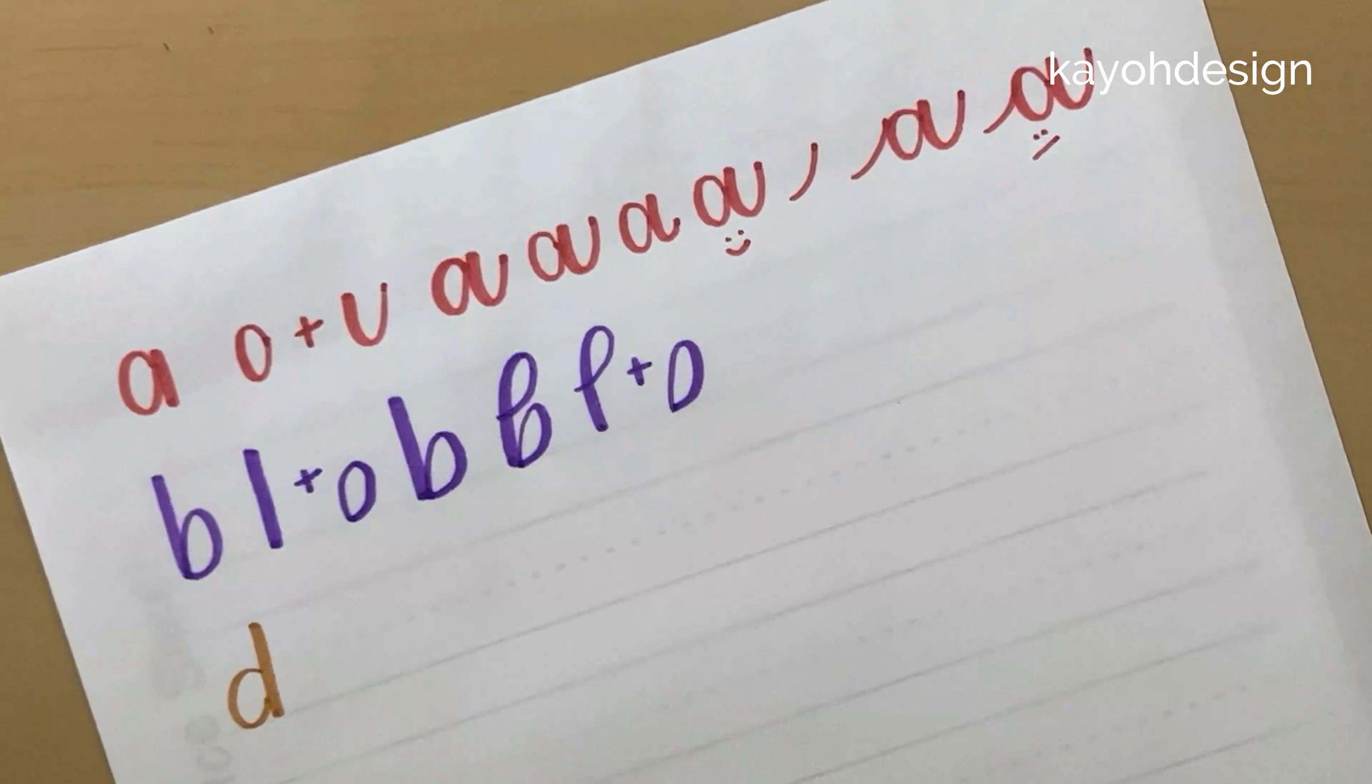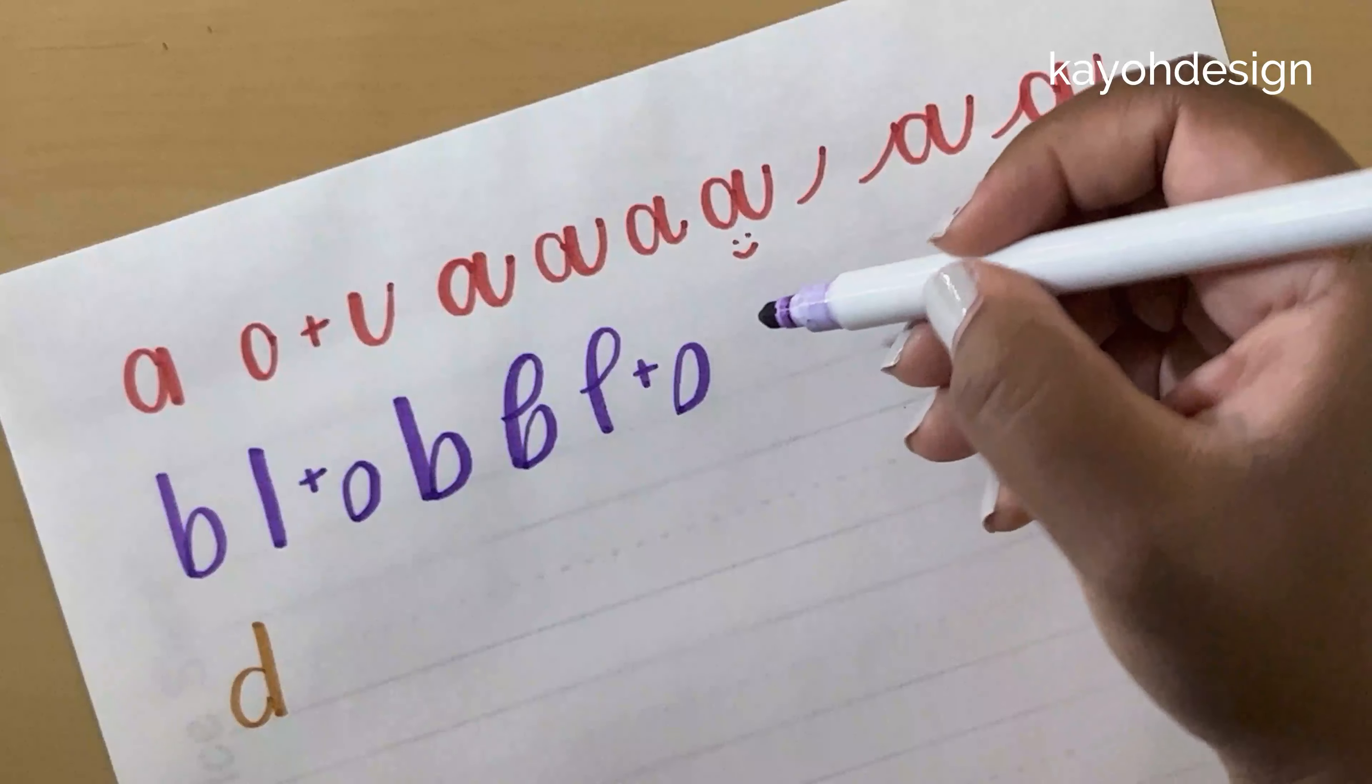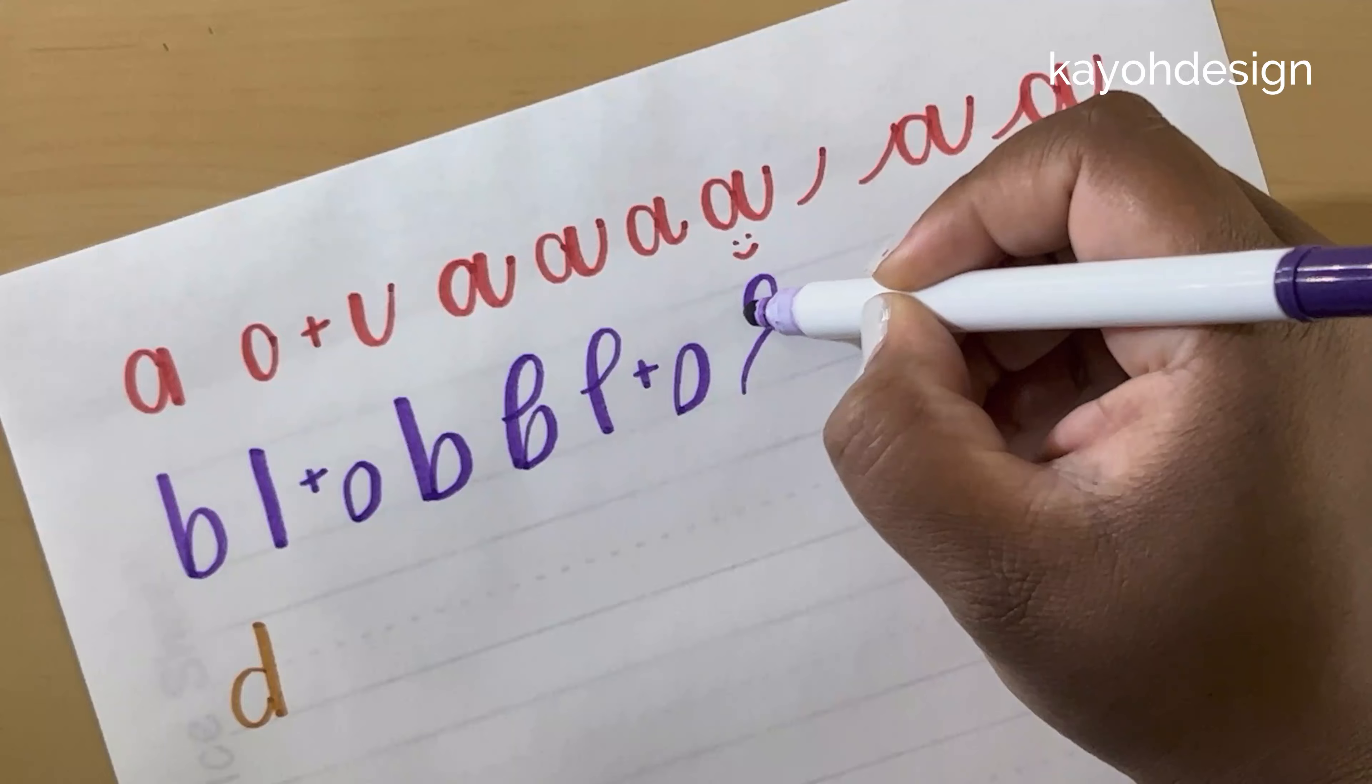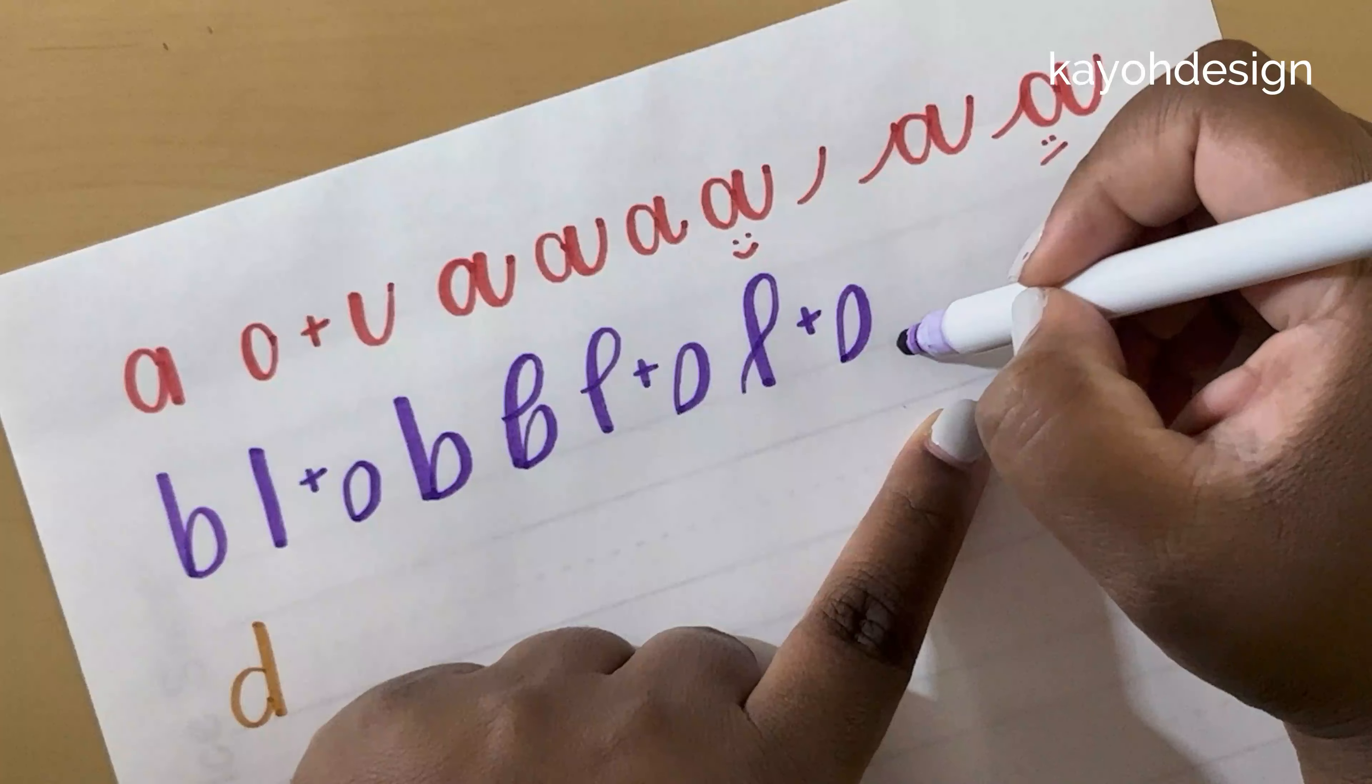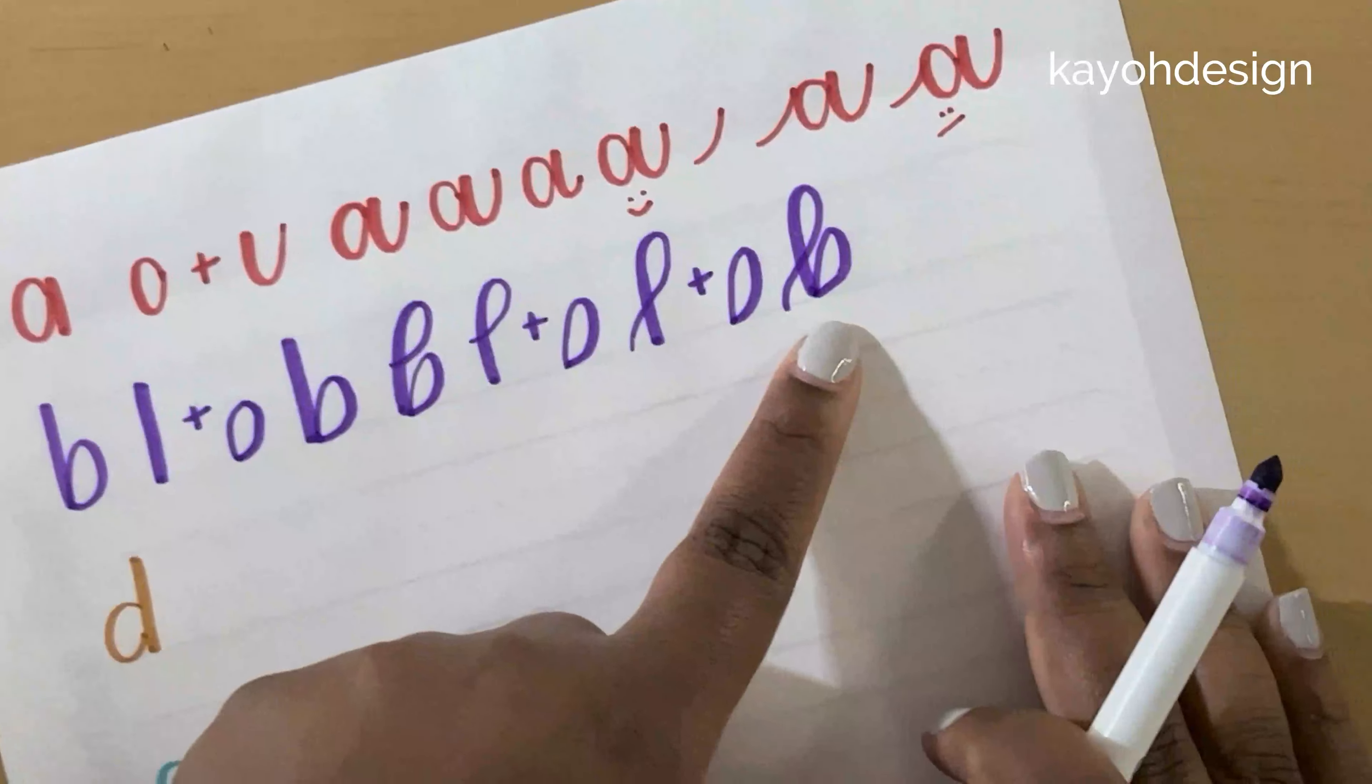Another way you can draw a B is essentially this loop, but you're going to start it from the baseline, bring it out, up, over and down. And then add this petal shape, which would give you something like that.